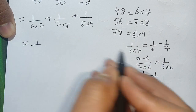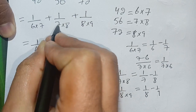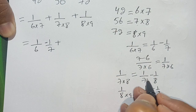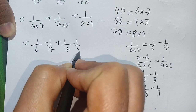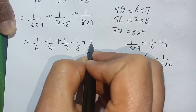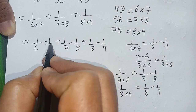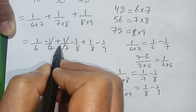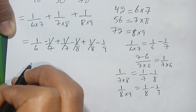Replacing all terms: 1 divided by 6 times 7 becomes 1 divided by 6 minus 1 divided by 7, plus 1 divided by 7 minus 1 divided by 8, plus 1 divided by 8 minus 1 divided by 9. We can cancel out 1 divided by 7 with the opposite-sign 1 divided by 7, and same with 1 divided by 8 and the opposite-sign 1 divided by 8.